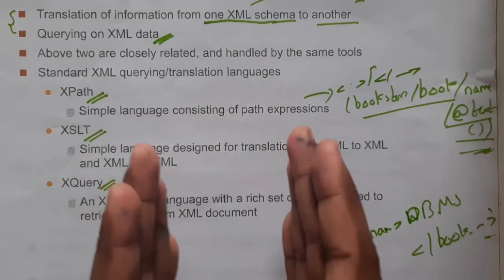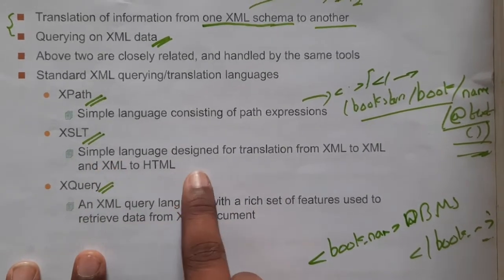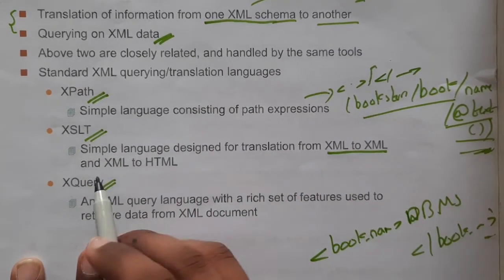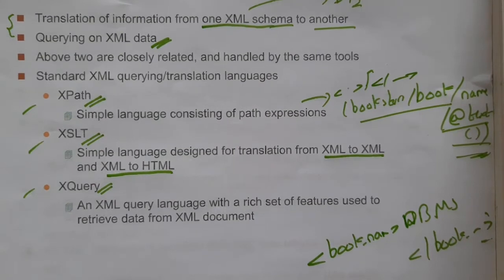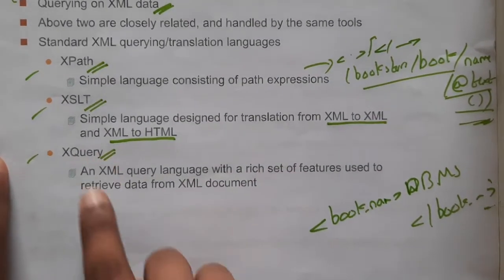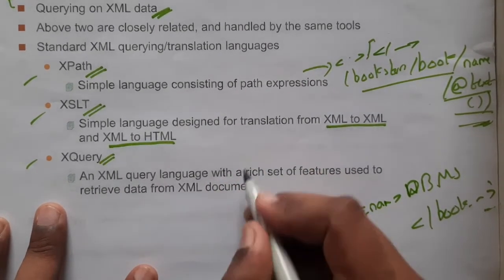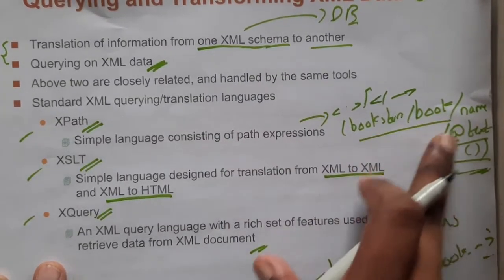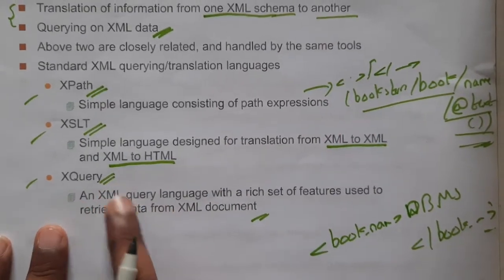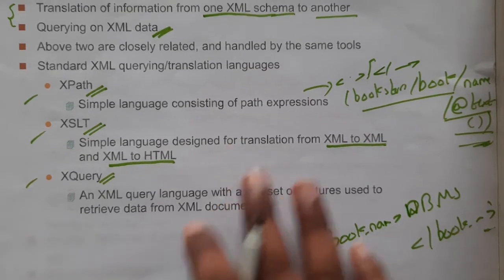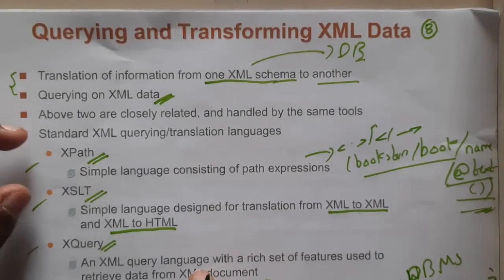The second method is XSLT. In this method you convert one XML document into another XML document, or one XML document into an HTML document. It is a simple language designed for translating XML to XML or XML to HTML. The third method is XQuery — an XML query language with a rich set of features used to retrieve data from XML documents. XQuery is directly a query language where you can write conditions and query XML directly.